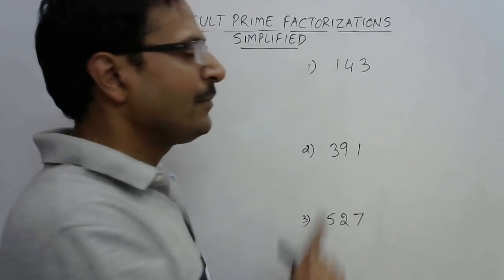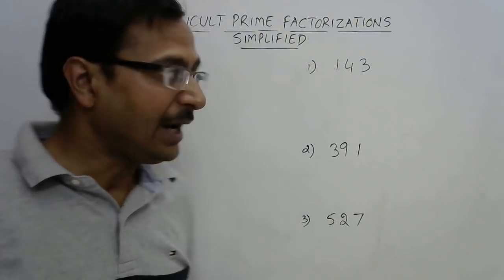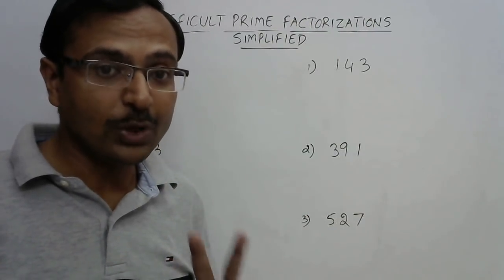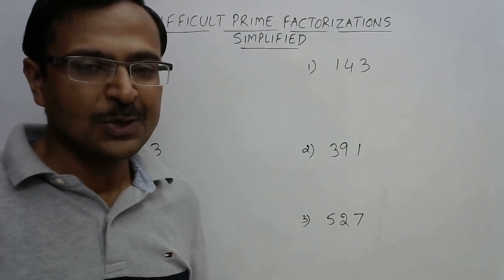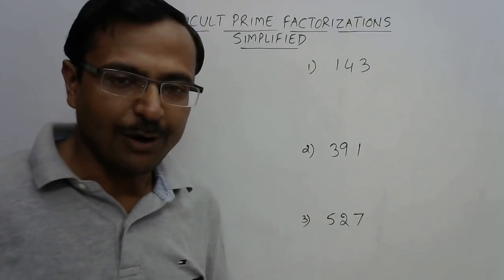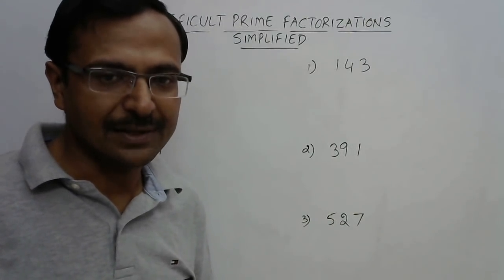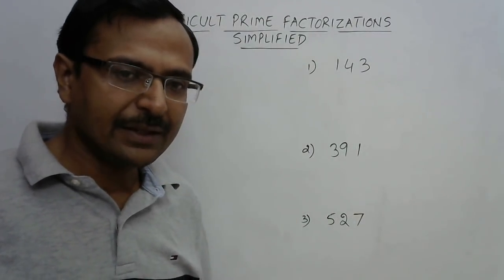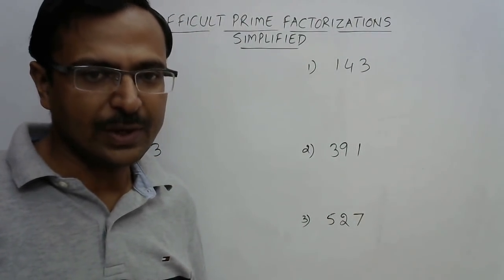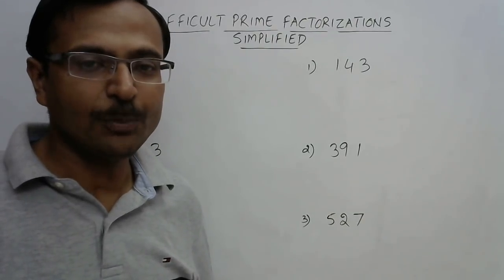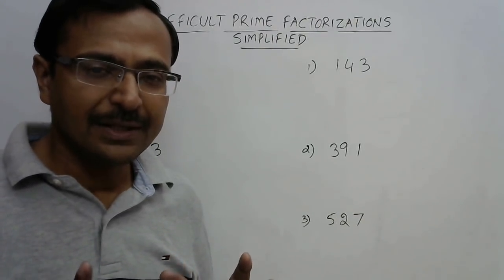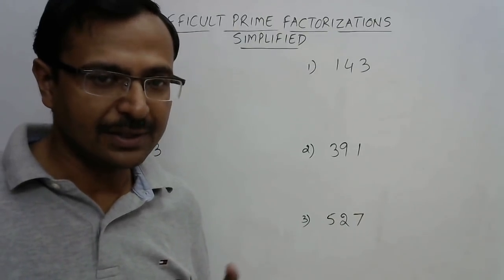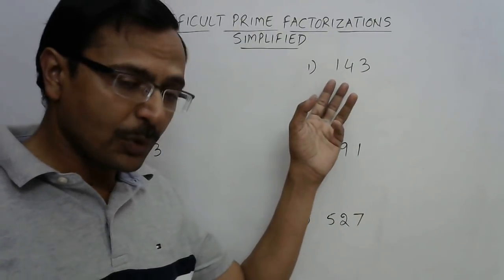So I will take the basic example of 143 and then increase the complexity to factorize larger numbers which are products of two large primes. Now see 143 — the number is quite small, and if you have to multiply two prime numbers, you cannot think of large primes like 31 or 37, because their product with another large prime will be far more than 143.